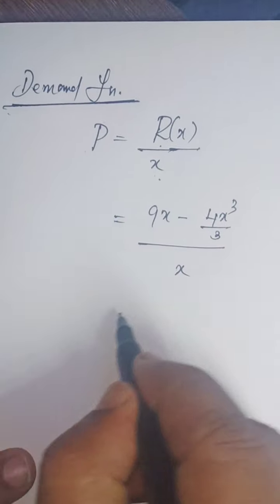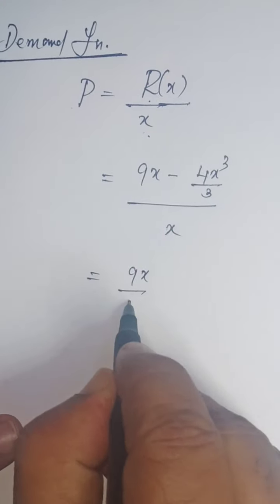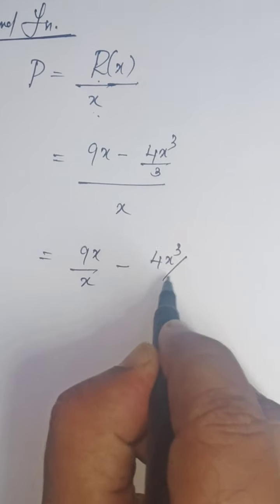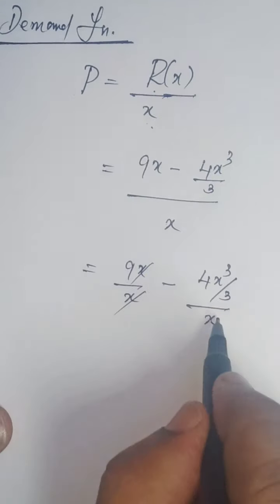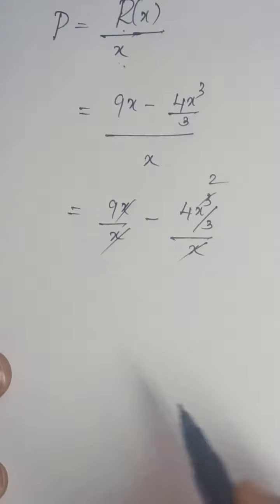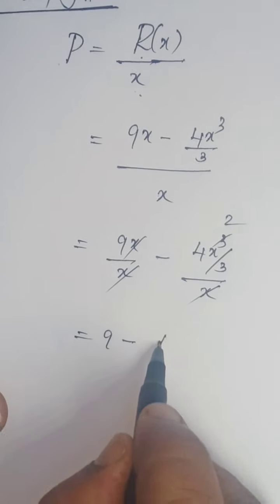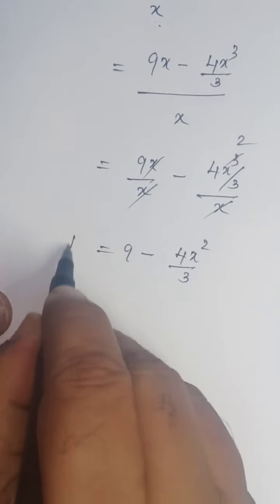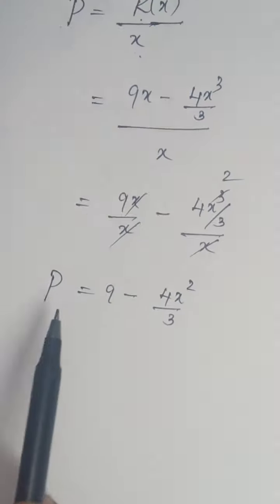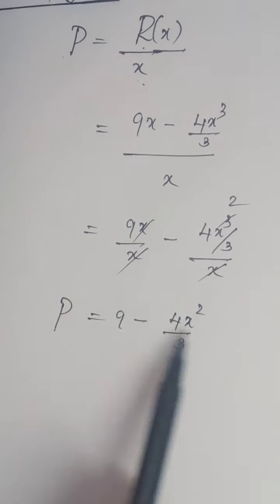x cancels here. So what is the answer? 9 - 4x²/3. That is the demand function. Demand function P in terms of x, remember.